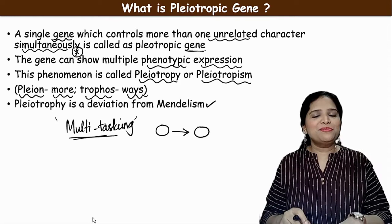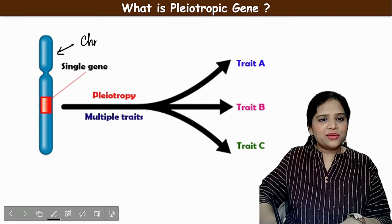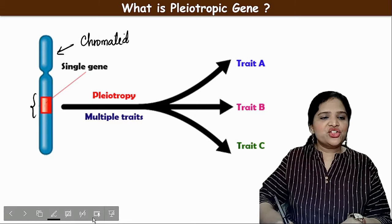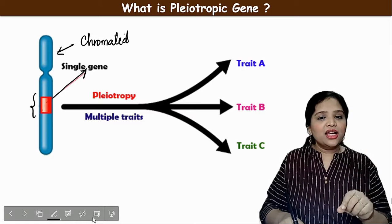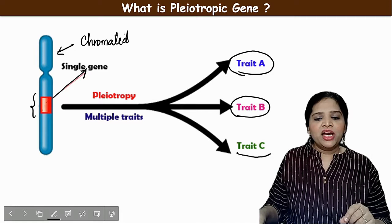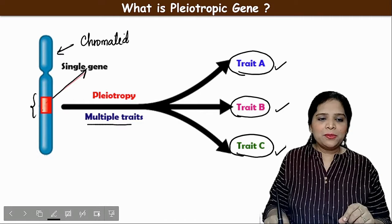Look at this picture — this is a chromatid on the chromosome. There is a red region which denotes a single gene. If this single gene controls different characters in an organism — say character A, character B, character C — that is multiple characters, such a gene is called a pleiotropic gene.